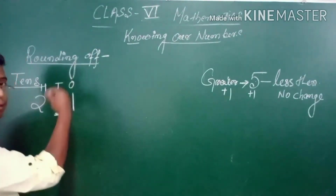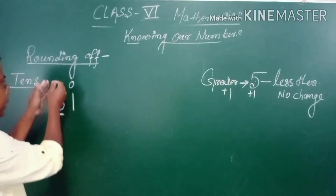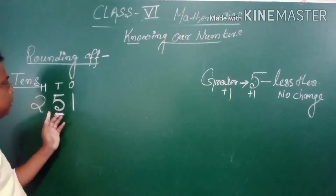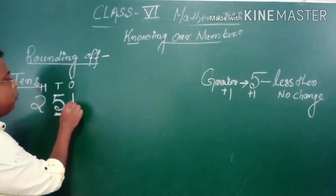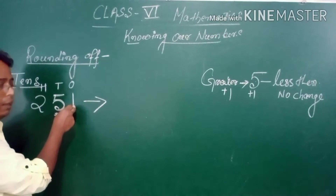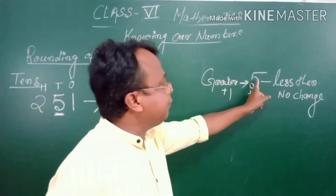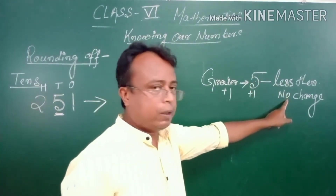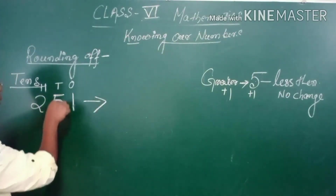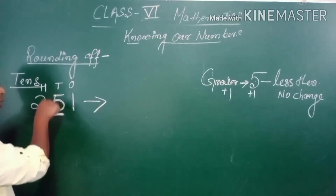For rounding up to the nearest 10, you see the digit just next to the tens place. The tens digit is 5. Now see the next digit — the units digit — which is 1. Is 1 less than or greater than 5? It is less than 5, so no sense — this digit does not change.